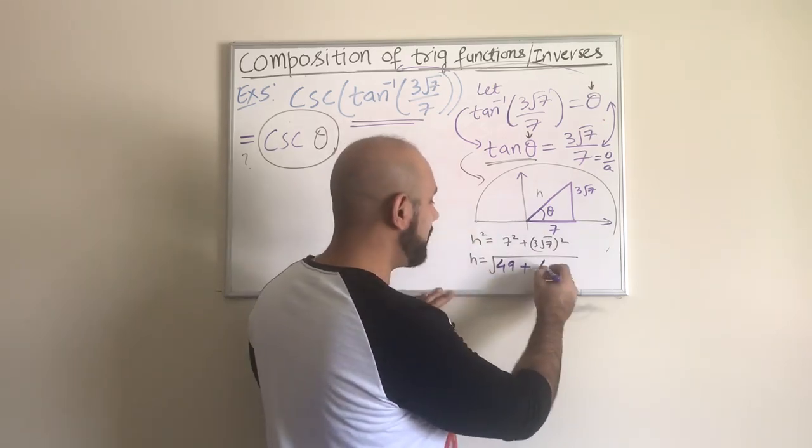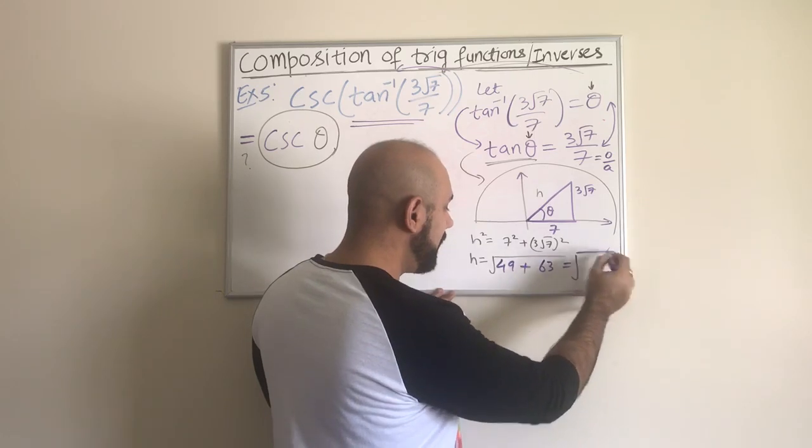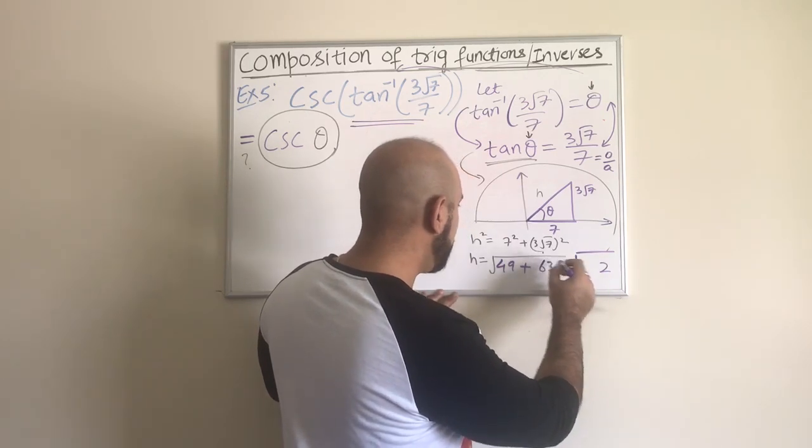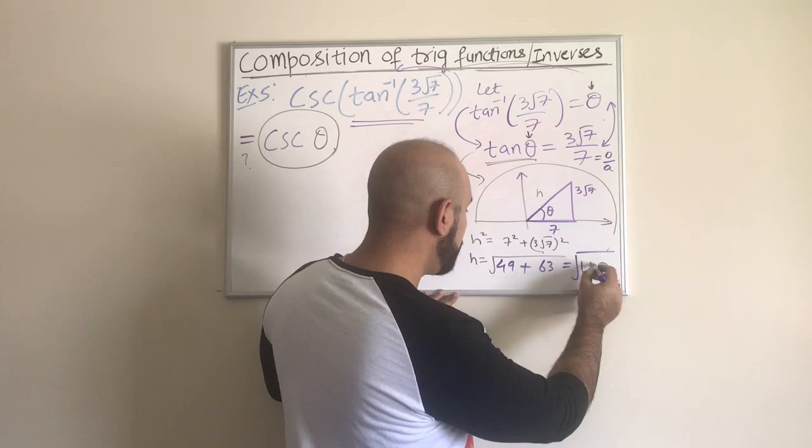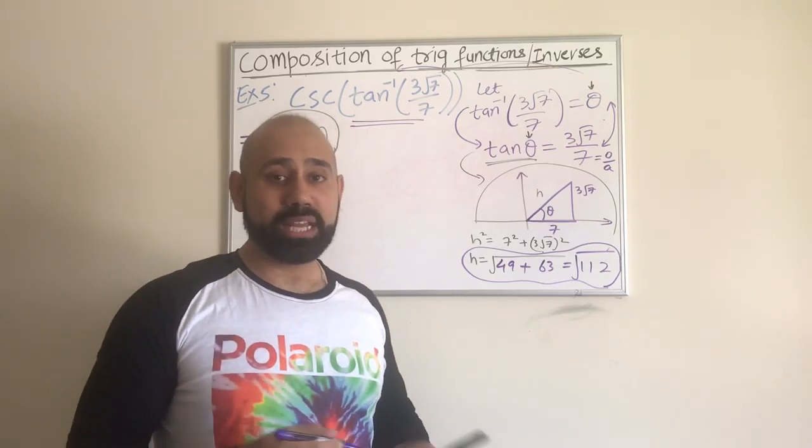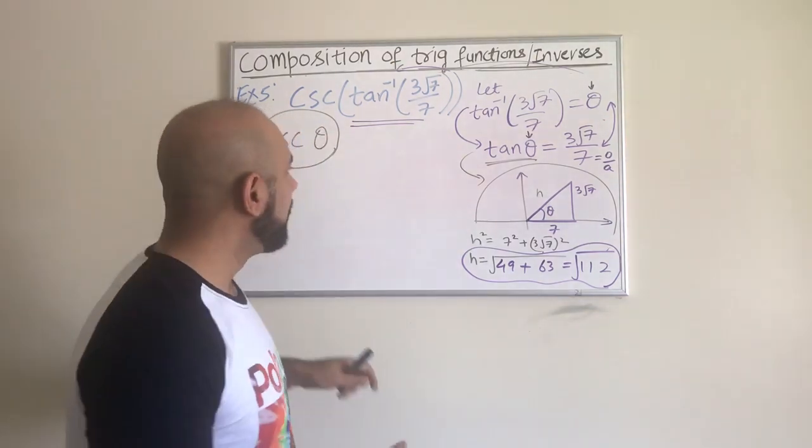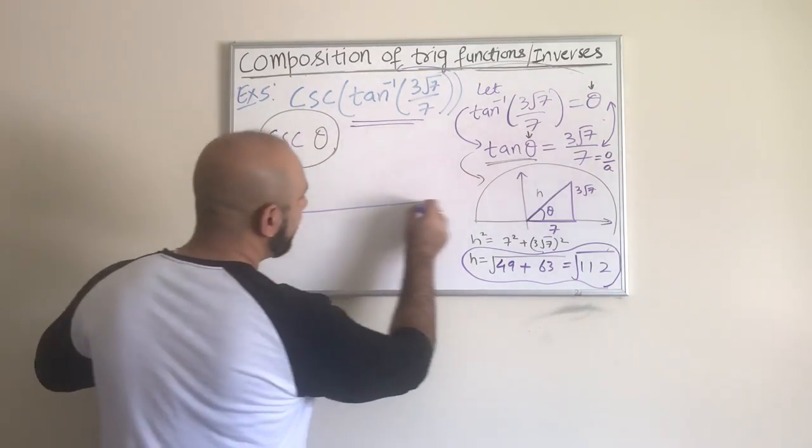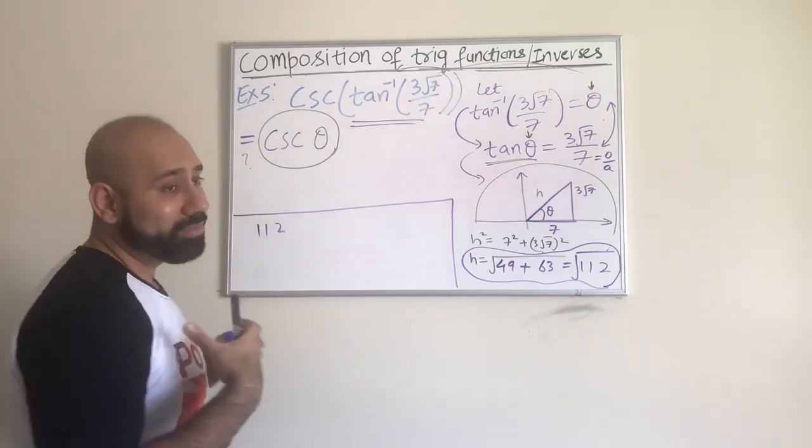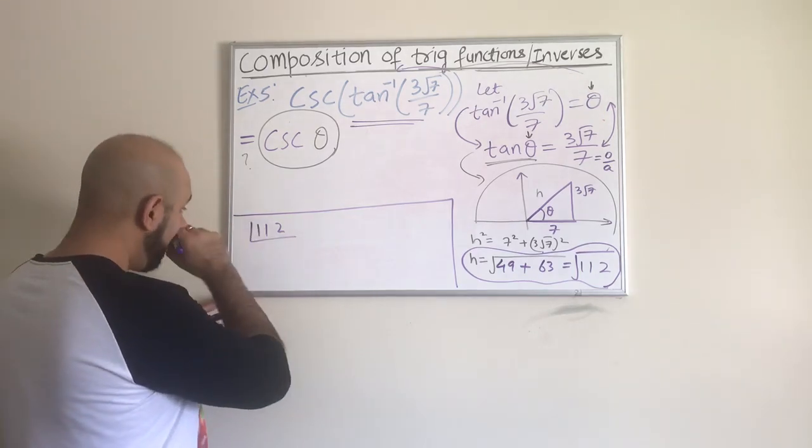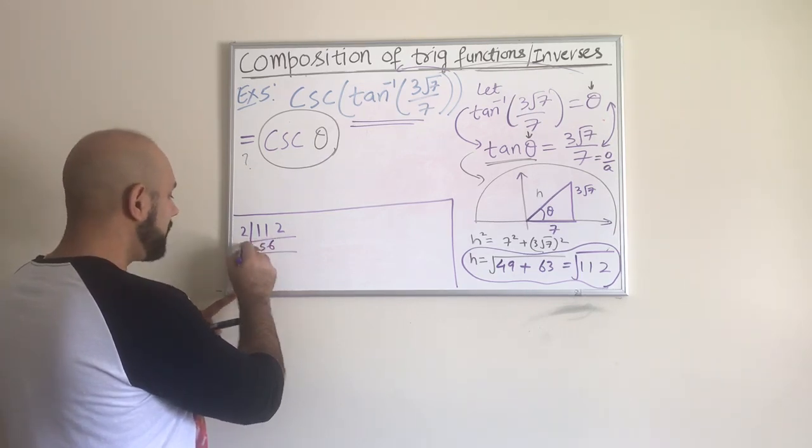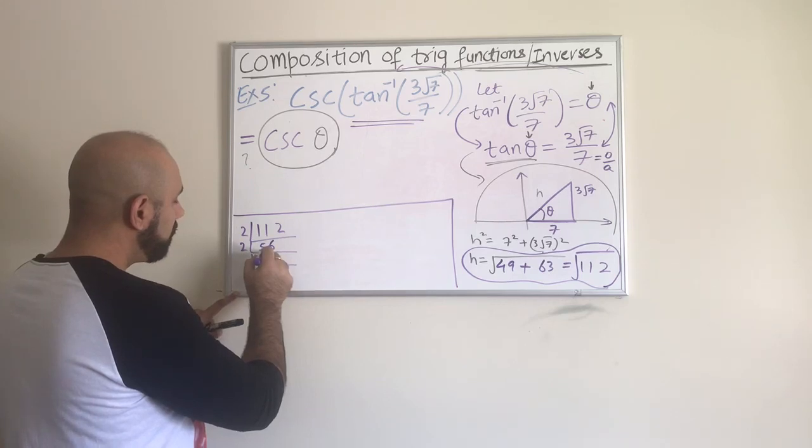To find the hypotenuse I'm going to use the Pythagorean theorem. So h² is 7² plus (3√7)². h will be square root of all that. If I simplify this, it's going to be 49 plus 3² is 9, 9 times 7 is 63. So it's √112.